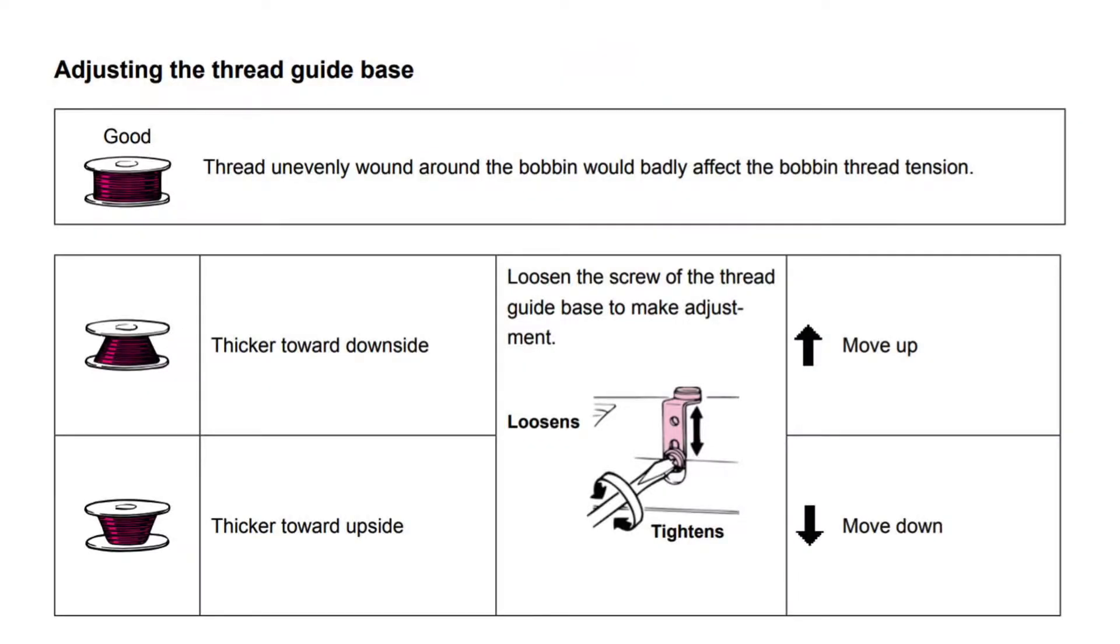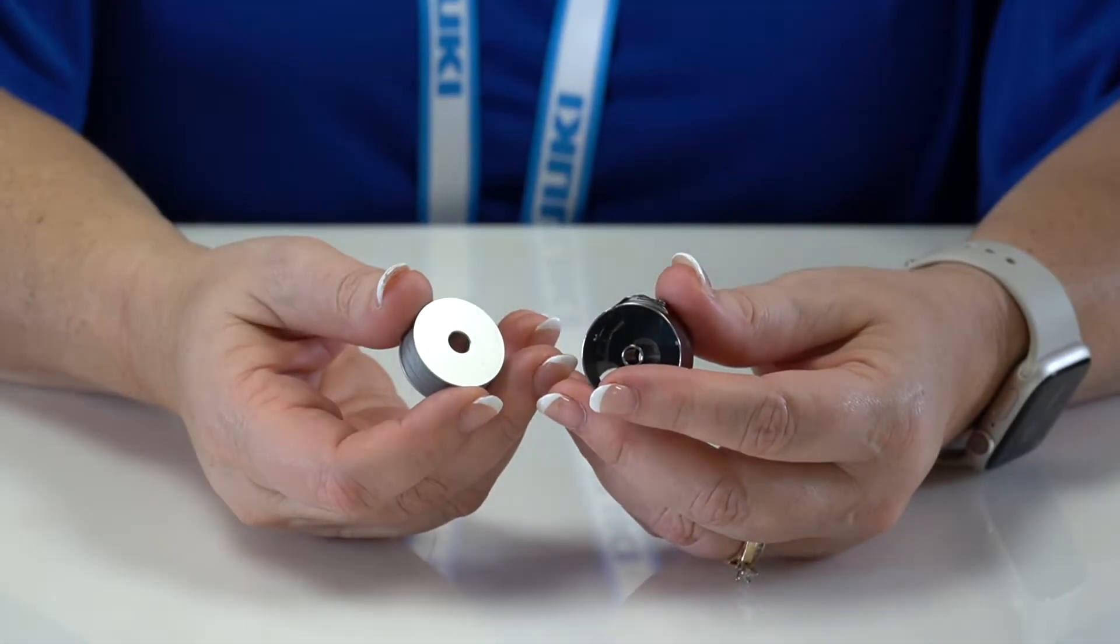Take a look at this illustration which is also in your manual. It talks about how you can loosen the screw of the thread guide base to make adjustments if your bobbin is unevenly wound.